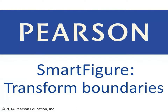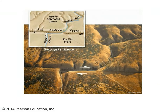Let's begin our discussion by taking a look at a classic location, Wallace Creek in California. Wallace Creek is the name of the little drainage here. I know it's dry at the moment, but when it rains it does actually have water in it, and it drains across the San Andreas Fault. Motion along that fault has offset Wallace Creek along this central segment right here.